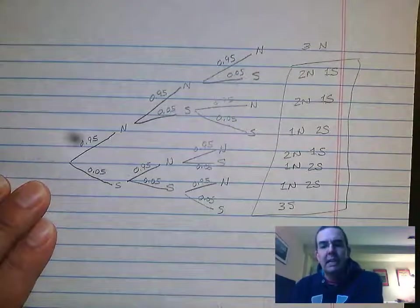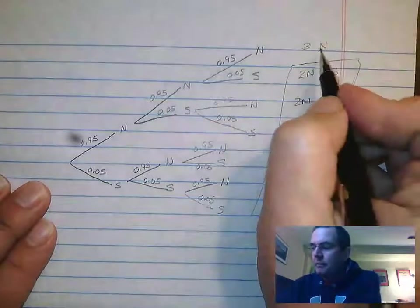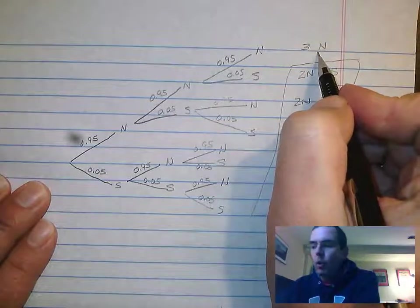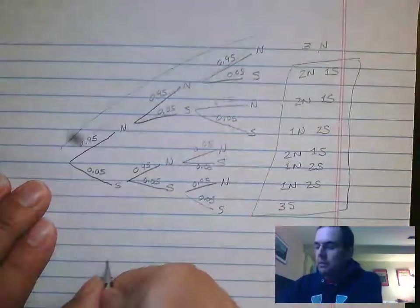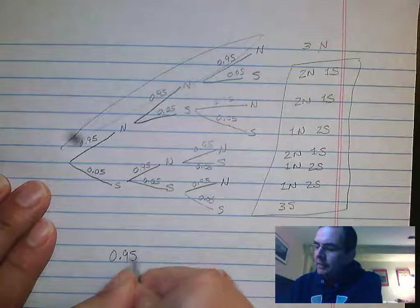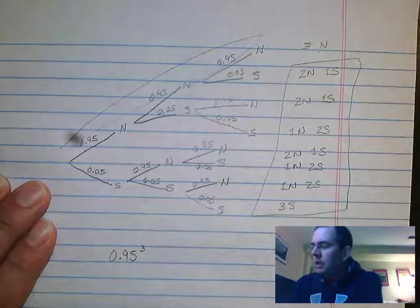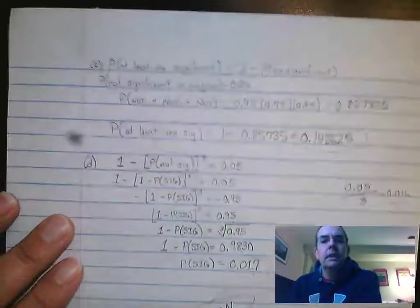So again, easiest way to get this: figure out what this is, take it out of one. Since they're independent, I multiply those three numbers together, so it's 0.95 cubed.